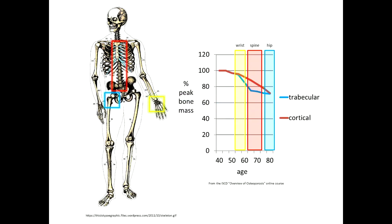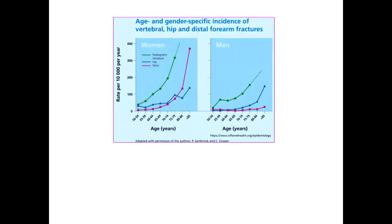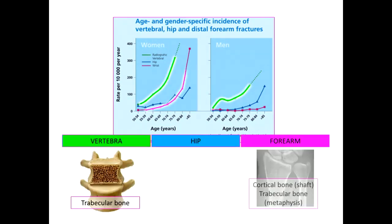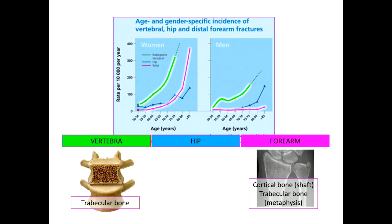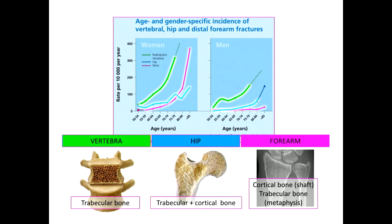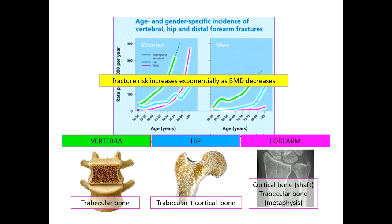Bones are made up of trabecular and cortical bone, and the differential loss of trabecular and cortical bone over time is reflected in the type and incidence of fracture seen. Vertebral and forearm fractures are common early on in the disease, as these are predominantly made of trabecular bone, which is most affected early on. Hip fractures increase with increasing age due to loss of both trabecular and cortical bone, and fracture risk increases exponentially as bone mineral density decreases.